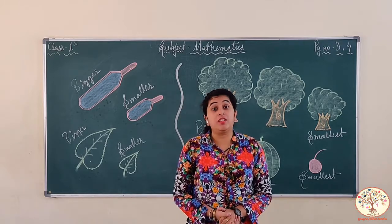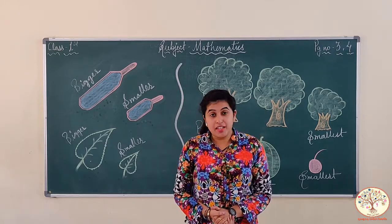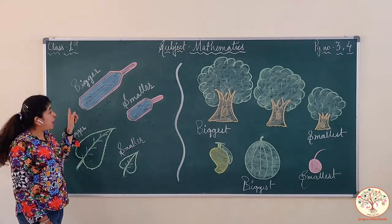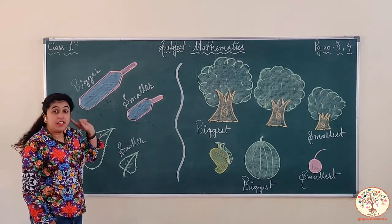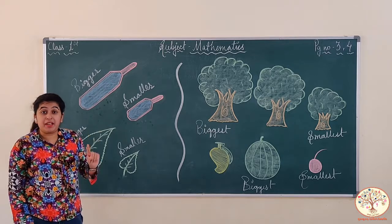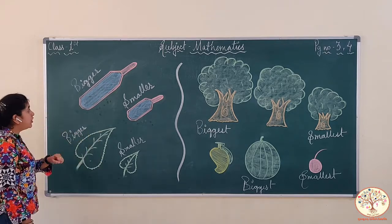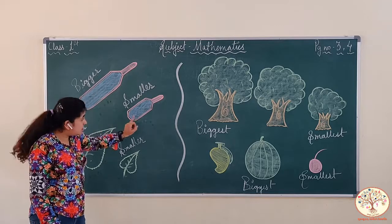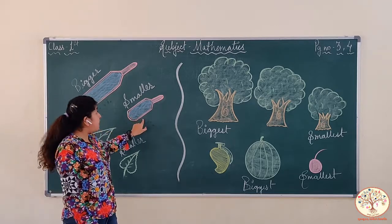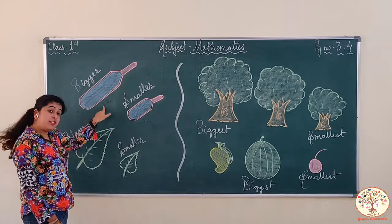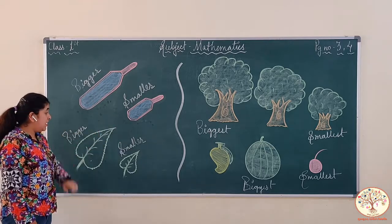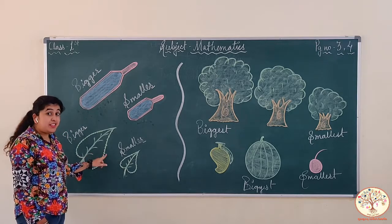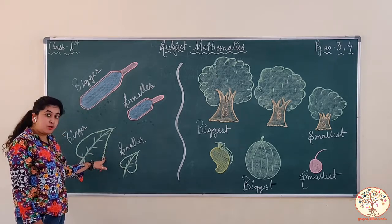But today we are here to learn the concept of bigger and smaller. When we compare one object with another, then we use the concept of bigger and smaller. Look here. This bat is bigger than this one and this bat is smaller than this one. Similarly, this leaf is smaller than this one and this leaf is bigger than this one.